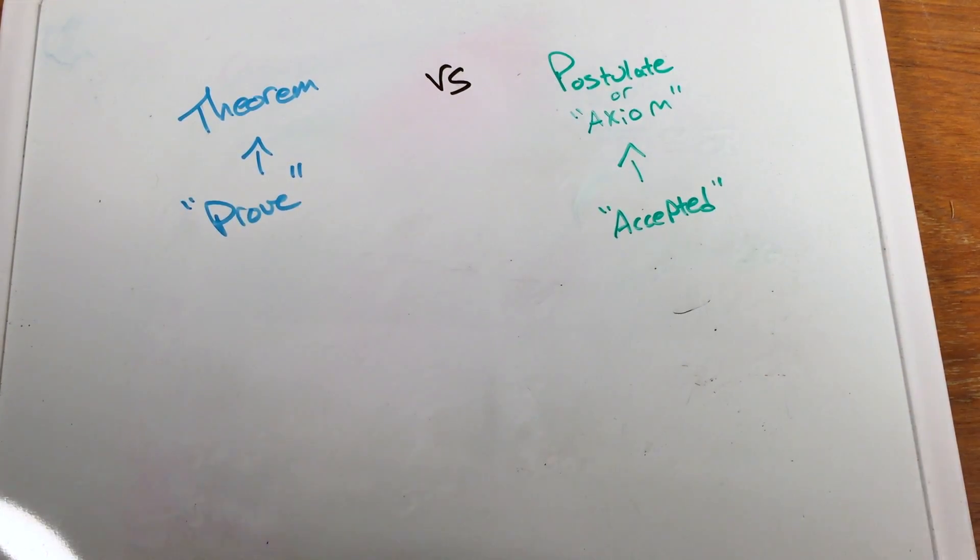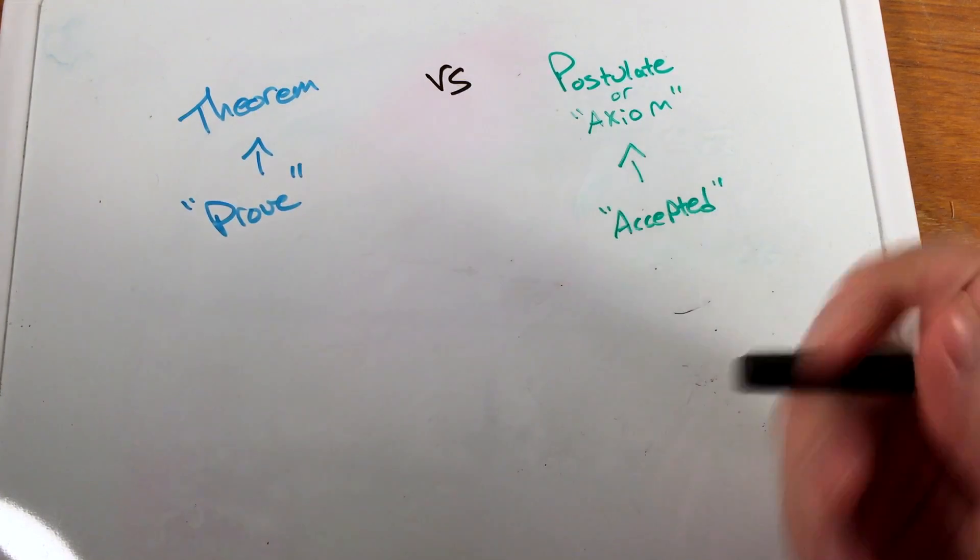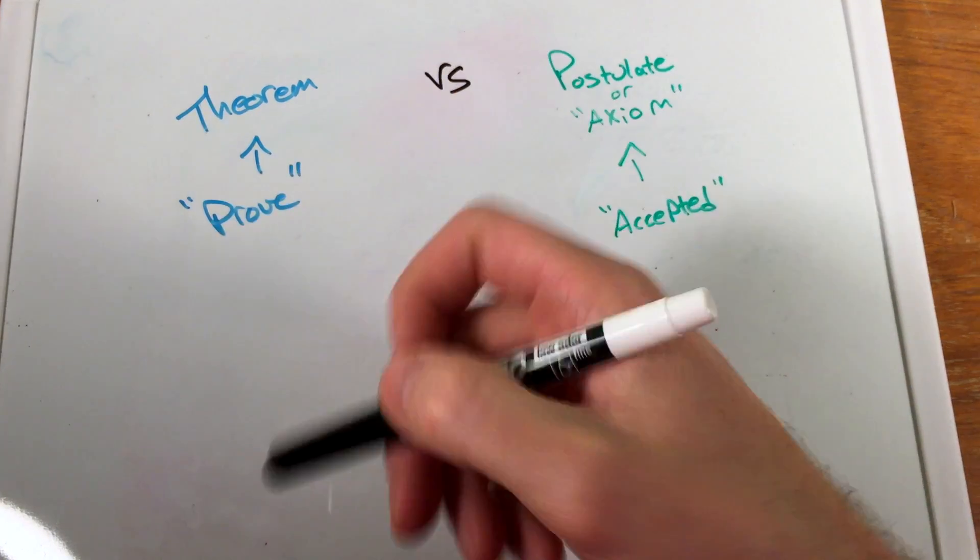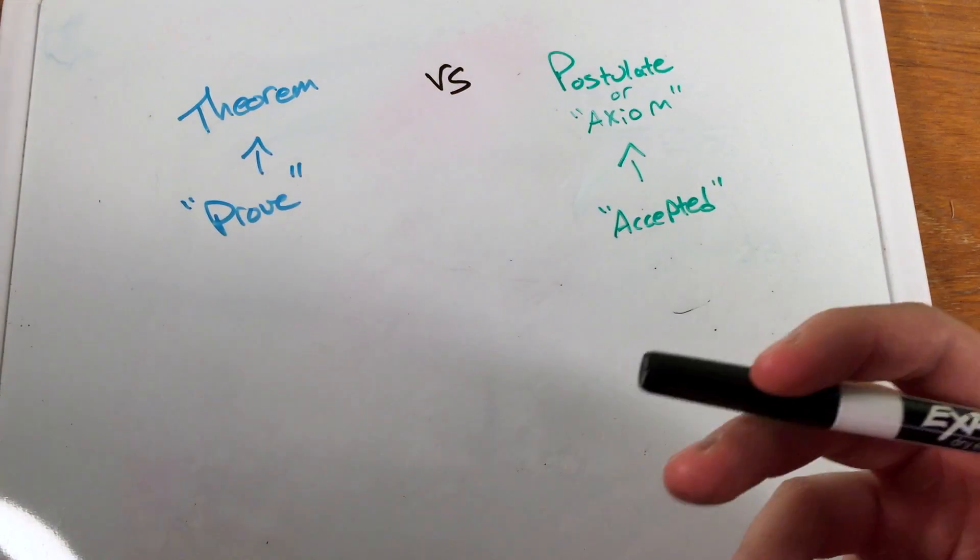we don't reprove it every time. So there are certain theorems that are going to come about that we will prove to be true, and once we've proven them to be true, we can just use them in everyday life without reproving it every single time. That would be a waste of time.